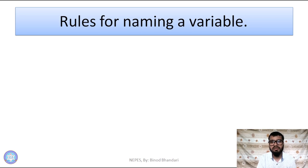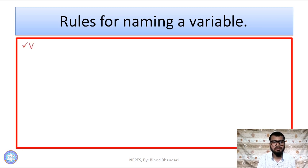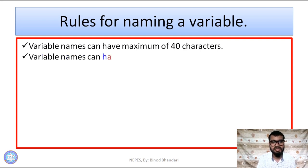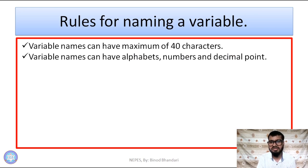Now, the rules for the name of a variable. First: a variable name can have a maximum of 40 characters. We can write the variable name up to 40 characters only, not more than that. Next rule: a variable name can have alphabets, numbers, and decimal points.